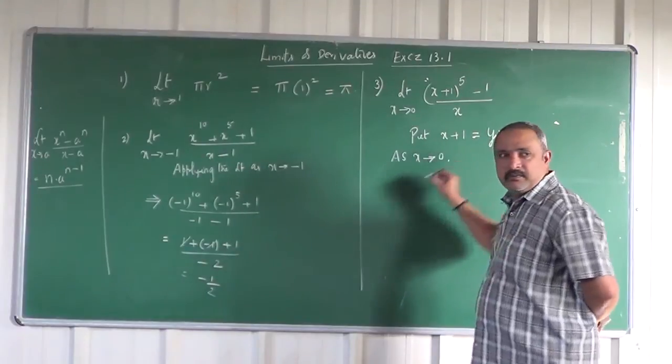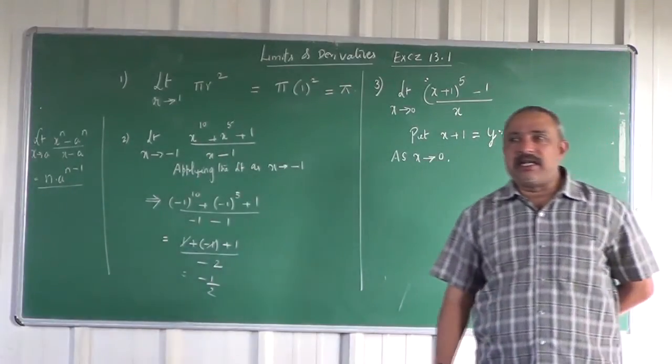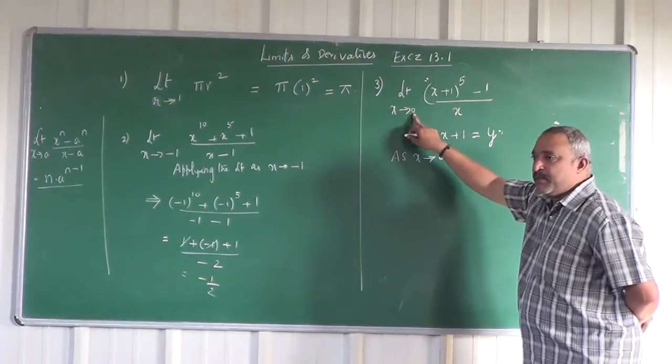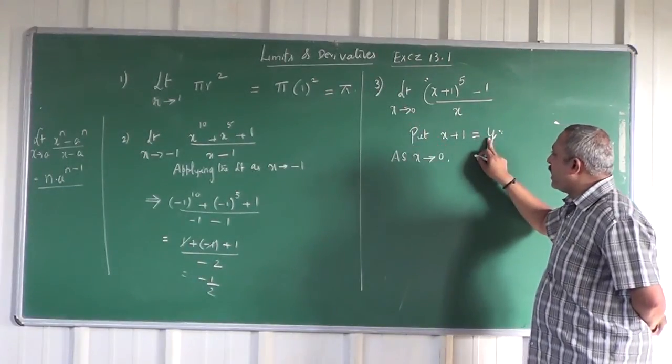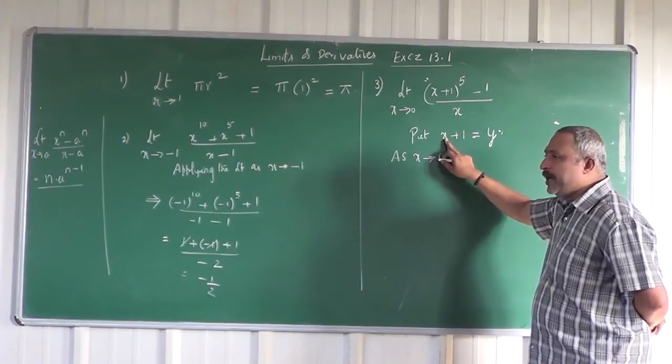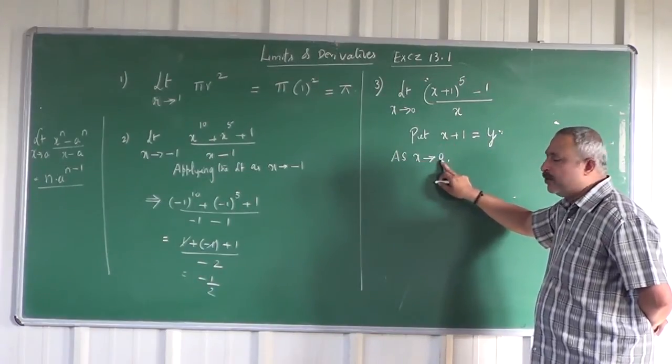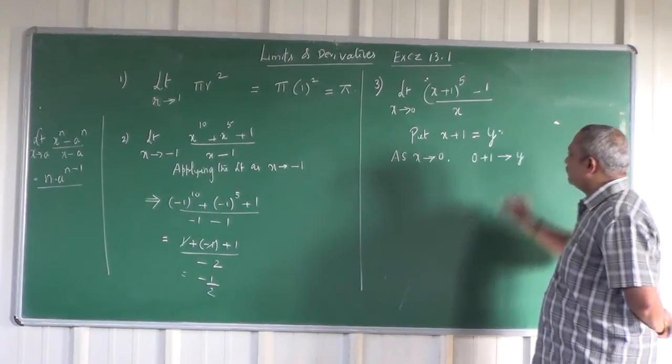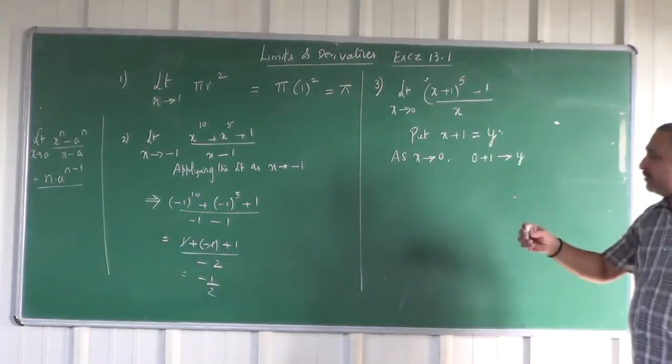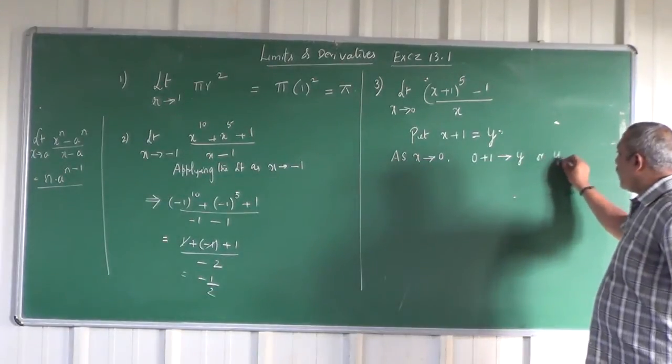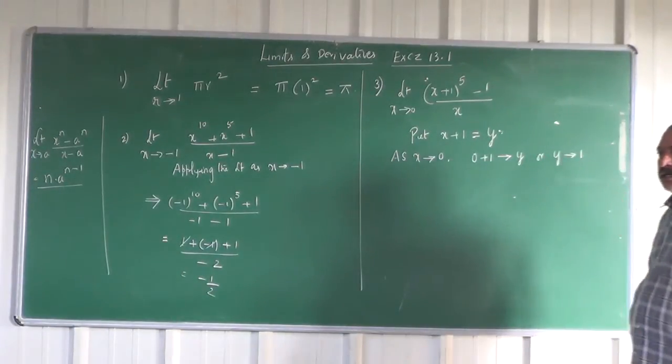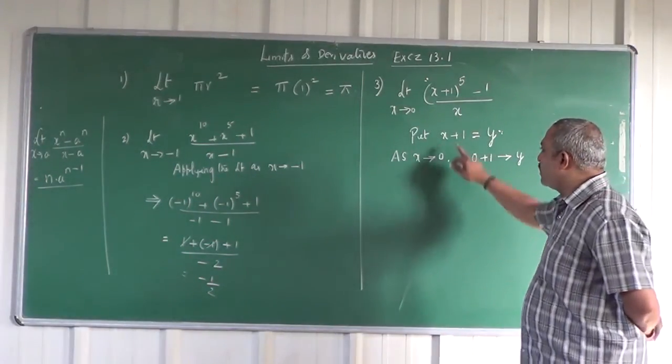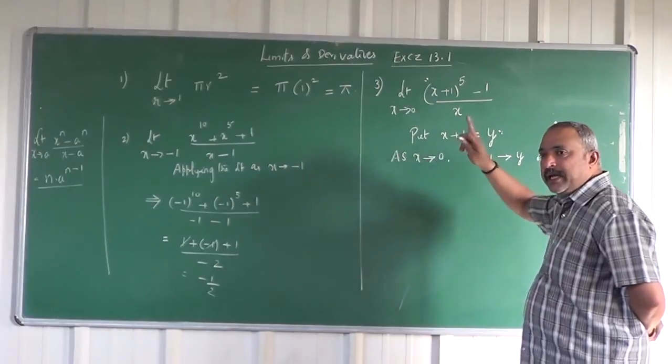As x tends to 0, what will happen to y? You put 0 here because x is approaching 0. If you put 0 there, 0 + 1 approaches y. Then y tends to 1. As x tends to 0, y tends to 1 because x + 1 = y is the substitution.